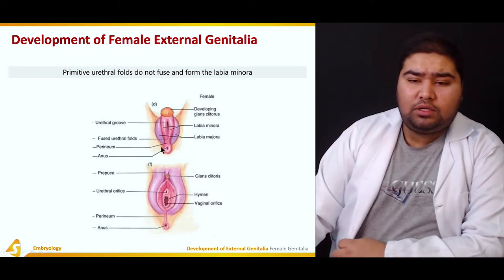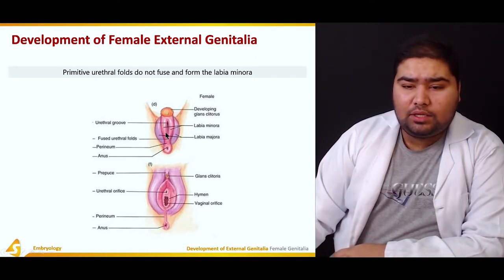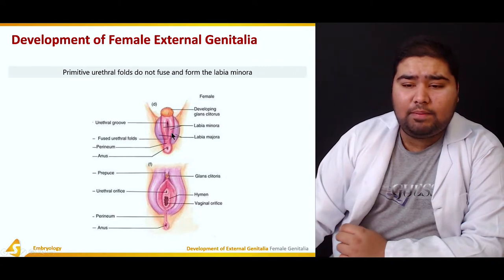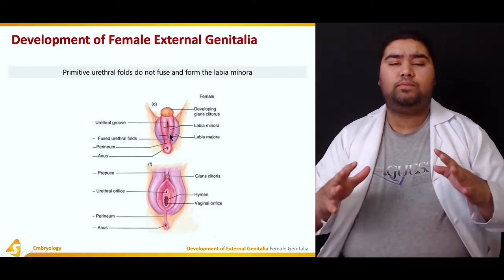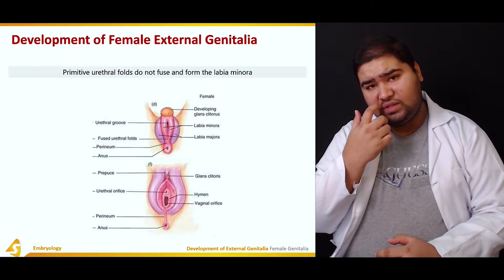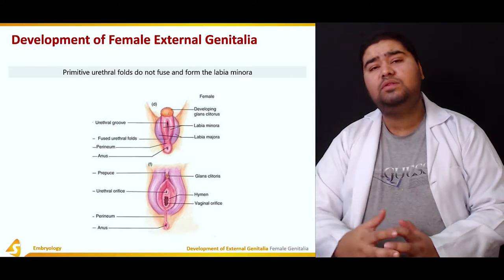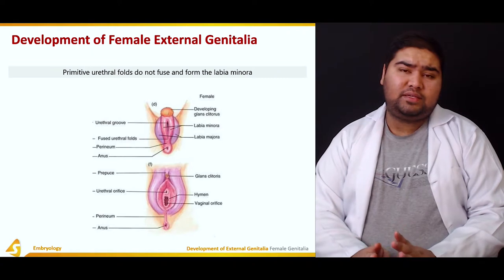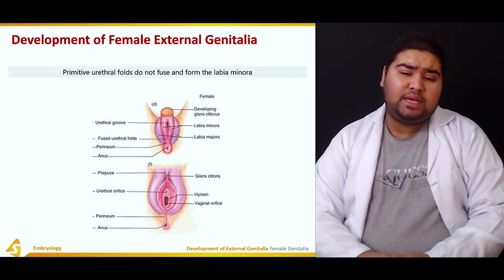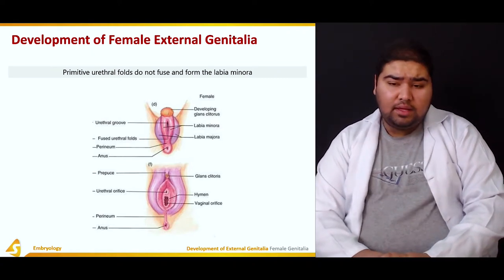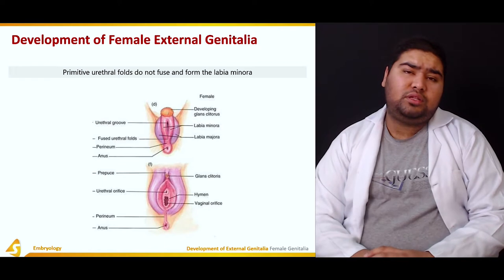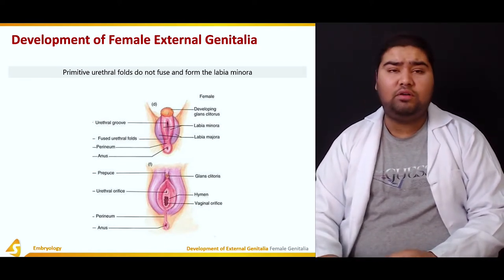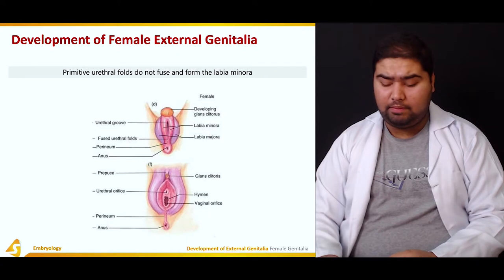The primitive urethral folds do not fuse, and as a result they form the labia minora. In the male reproductive system the primitive urethral folds fuse to form the shaft of the penis; however, in the female the primitive urethral folds do not fuse and they help in the formation of the labia minora.